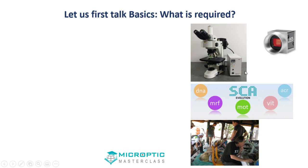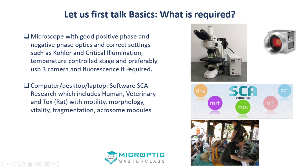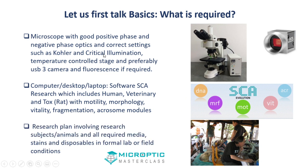I like to be very basic about what is required. First, let's talk basics. You need a good microscope with good positive phase and negative phase for animals. Critical and Köhler illumination are absolutely crucial and must be set properly. You need a computer — either a desktop or a laptop — with SCA software. That includes the research version, which is Human Veterinary Antox, with all the different modules you can see here.